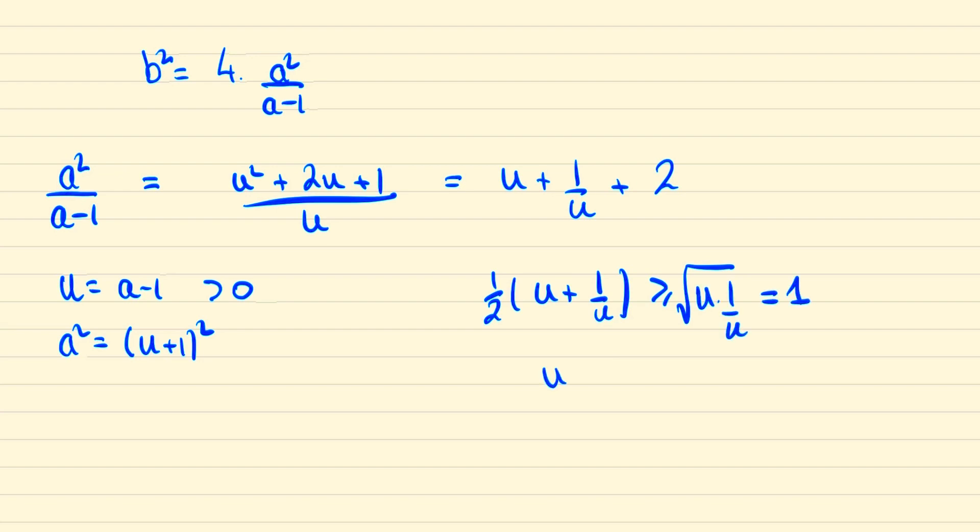And thus the minimum value of u plus 1 over u is at 2 which means the minimum value of this expression is at 4 and thus the minimum value of this expression is at 16 which implies that b which was x squared plus y squared has a minimum value of 4.